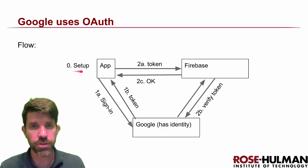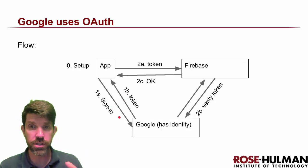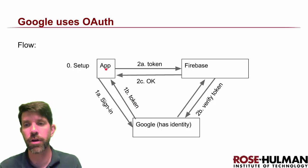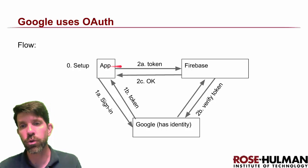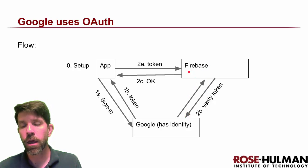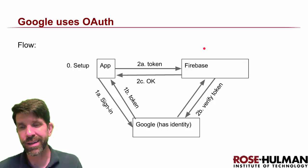We have some setup to do. Step one is to sign into Google — you've probably done this before where you click a button and it brings up a screen asking you to sign in. If you're already signed in, Google will verify that and send back a token to your app. We then send that token off to Firebase, which verifies it with Google.